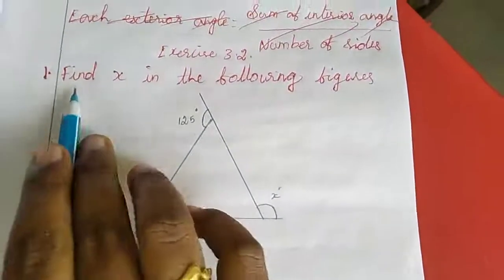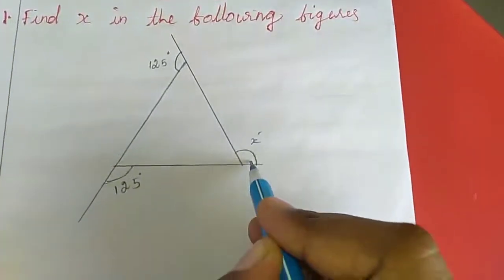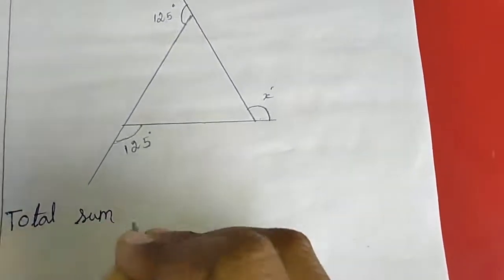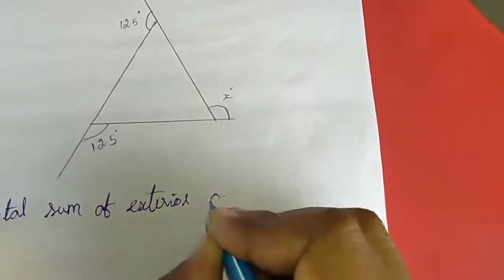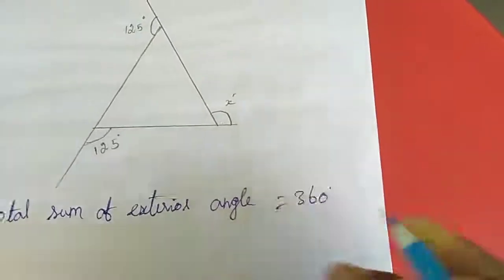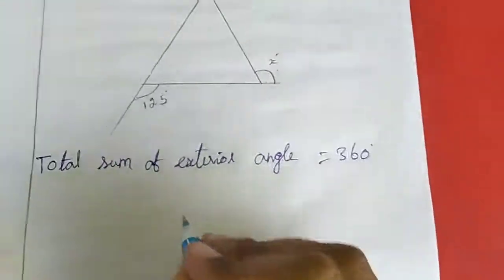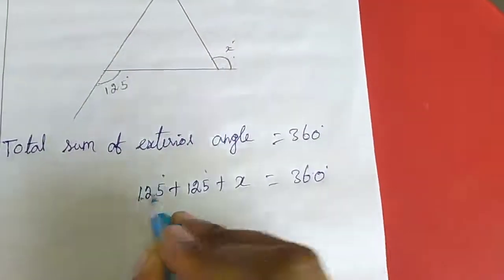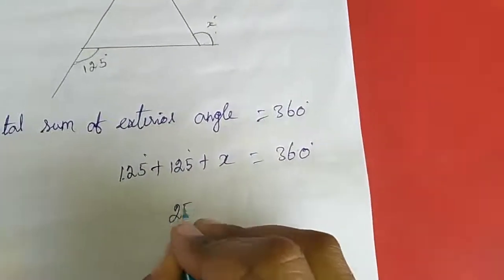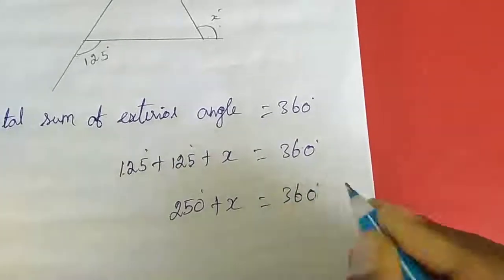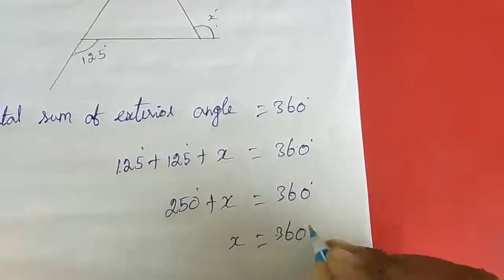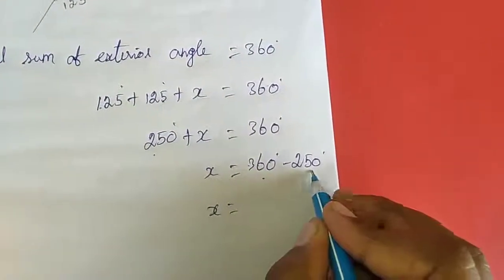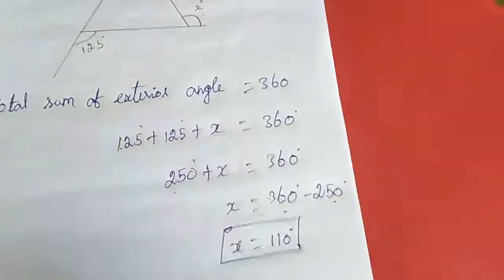Now we will move to the exercise. First sum: find x in the following figure. Here x is an exterior angle, so we write total sum of exterior angles equal to 360 degrees. That means 125 degrees plus 125 degrees plus x equals 360 degrees. Adding 125 plus 125 gives 250, so 250 plus x equals 360. Therefore x equals 360 minus 250, which gives x equal to 110 degrees.